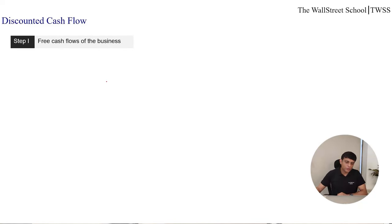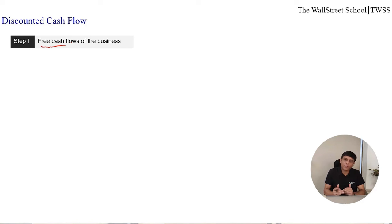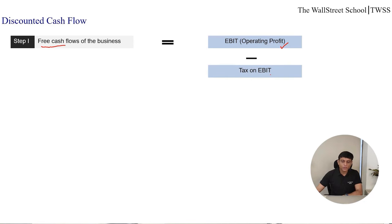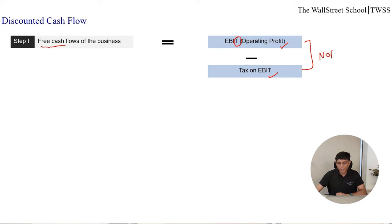Step 1: Free cash flows to the business. Free cash flows is the cash flow available for distribution amongst all stakeholders in the business — it is free after meeting the reinvestment requirements of the business. Free cash flows to the firm equals earnings to the firm — EBIT — minus taxes on EBIT. EBIT is the operating profit available to the entire firm before taxes, so we pay taxes first. This gives us NOPAT: EBIT net of taxes.